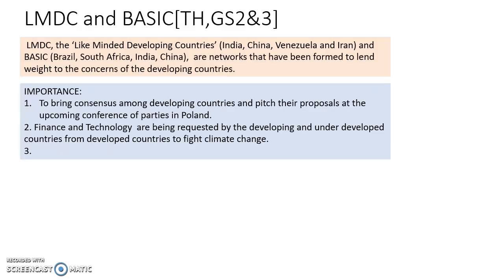The Like-Minded Developing Countries and BASIC countries are meeting this month to discuss the provisions in the upcoming Conference of Parties in Poland. The Conference of Parties in Poland will decide on the implementation of the Paris Treaty on climate change to limit greenhouse gases and to limit global warming up to 2 degrees centigrade. The main provisions both groups of developing countries are discussing are the finance part and the technology part.